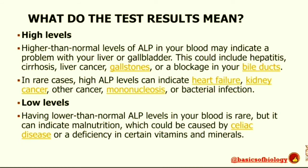Now we'll see what the test results mean. When the results of your alkaline phosphatase test are in, your doctor will discuss them with you and suggest what to do next. Higher than normal levels may indicate a problem with your liver or gallbladder — this could include hepatitis, cirrhosis, liver cancer, gallstones, or a blockage in your bile duct. Higher levels may also indicate a bone issue such as Rickets, Paget's disease, bone cancer, or an overactive parathyroid gland.